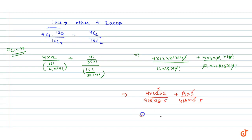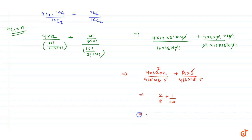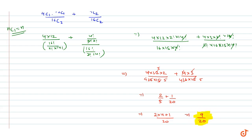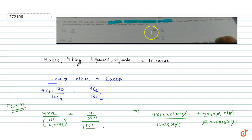LCM लेते हैं तो हो जाएगा: (2×4 + 1)/20 = 9/20। So this is our required answer। Options देखें तो option one is the correct answer।